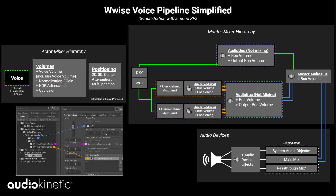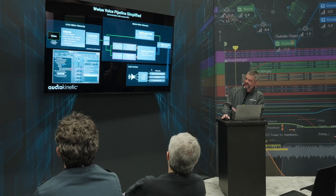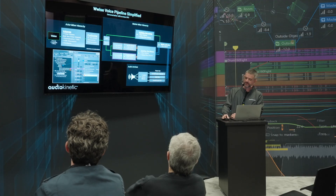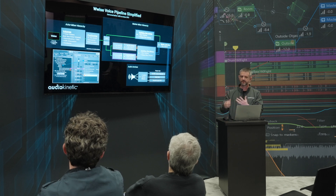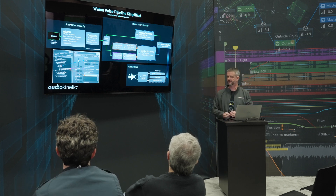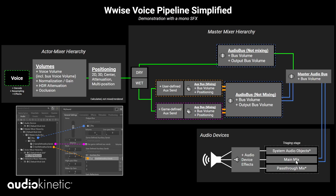This slide combines the previous two but adds the output audio device. If it's a 3D audio device, it's potentially receiving system audio objects to let the endpoints do the panning and final mix. Everything that Wwise mixes itself, or if there is no 3D audio, it happens in a mix. With 3D audio enabled, we also have a pass-through for music or non-diegetic sound. So if it's not positioned, it will automatically use the pass-through mix.